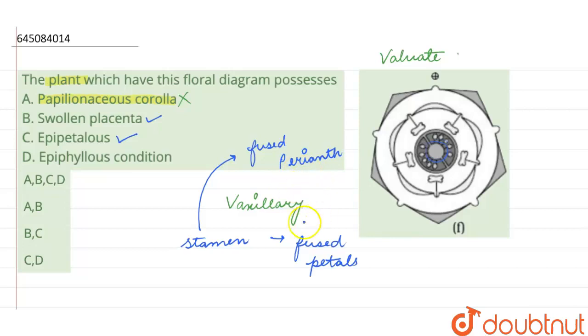But here the stamen is not fused with the perianth, therefore epiphyllous condition is not present in this floral diagram. So the correct options are swollen placenta and epipetalous, so B and C.